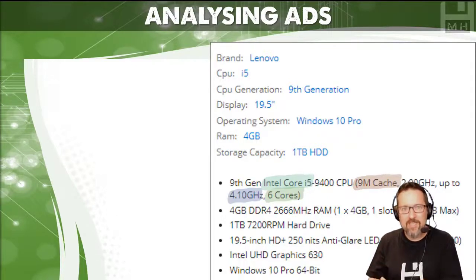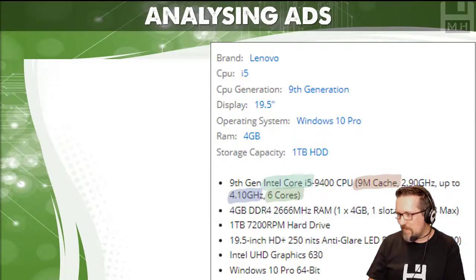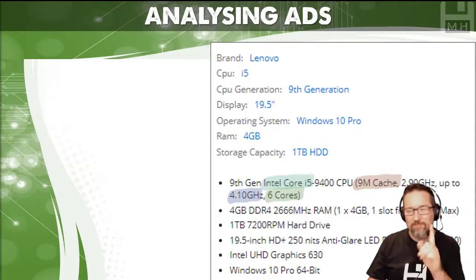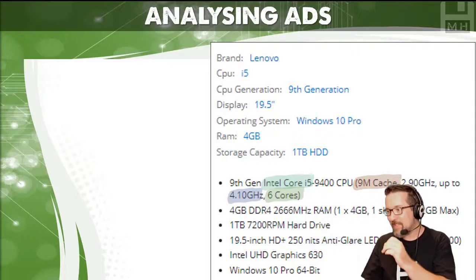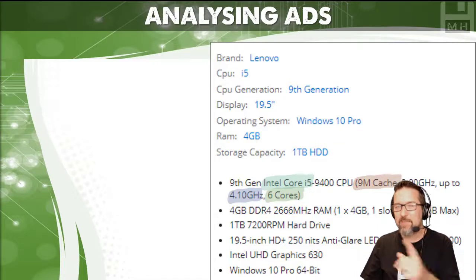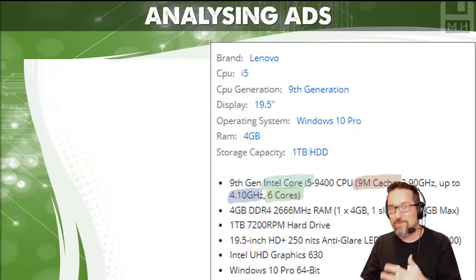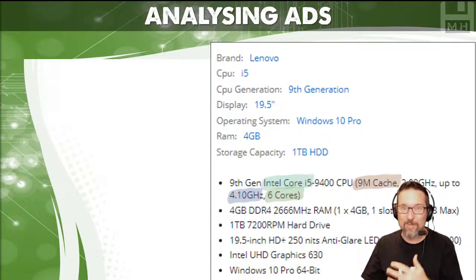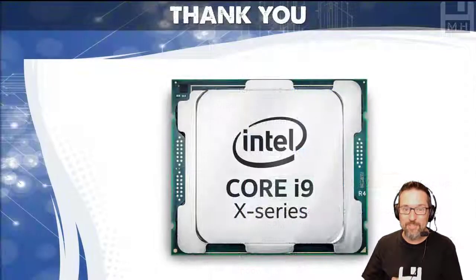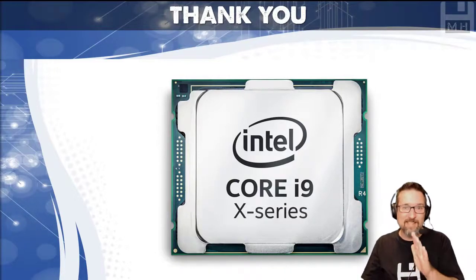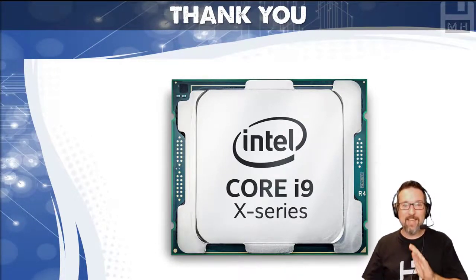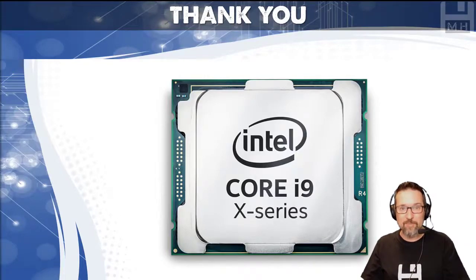It runs at 2.9 gigahertz up to 4.1 gigahertz, and it has six cores. So it's 4.1 gigahertz multiplied across six cores — that's the kind of speed you're getting. Very cool machine. So there you go guys, simple and straight to the point — processor specifications to look for when purchasing your next computer.